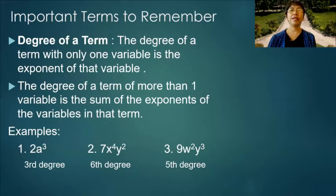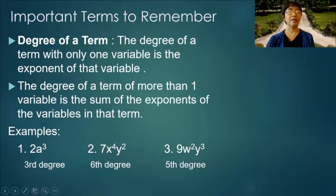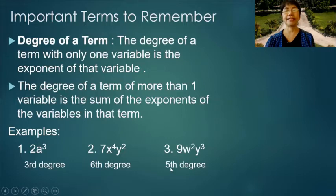Degree of a term: the degree of a term with only one variable is the exponent of that variable. The degree of a term with more than one variable is the sum of the exponents of the variables in that term. Example 1 is a third-degree monomial because the exponent of a is 3. Example 2 is a sixth-degree monomial because 4 plus 2 equals 6. Example 3 has a fifth-degree monomial by adding the exponents of w and y.